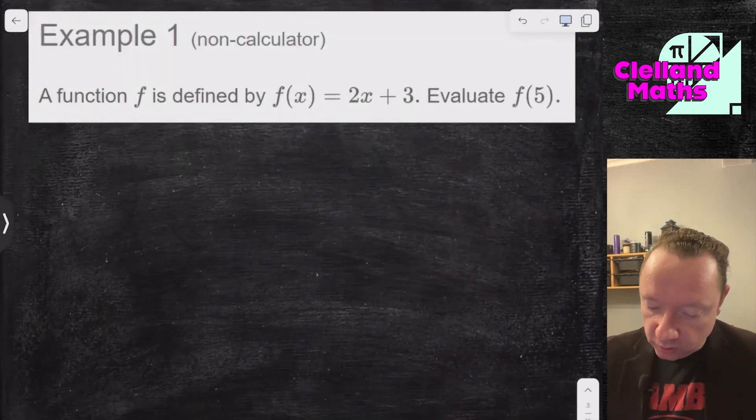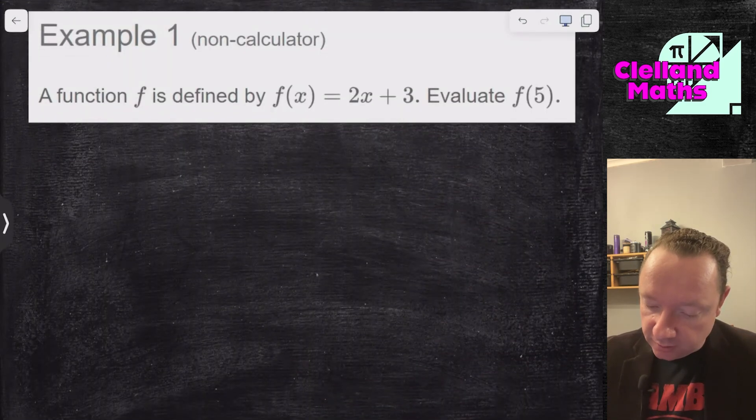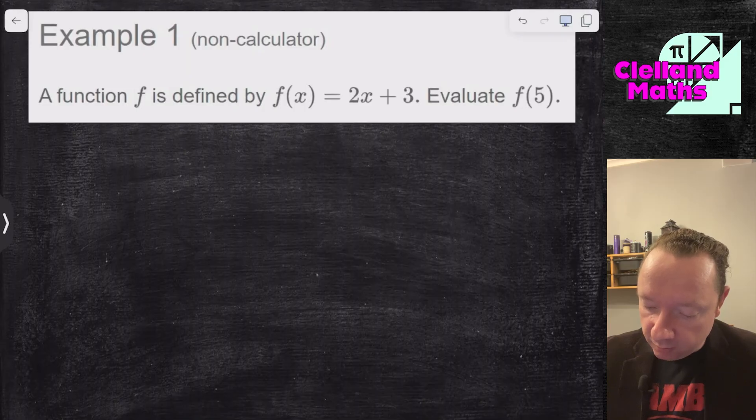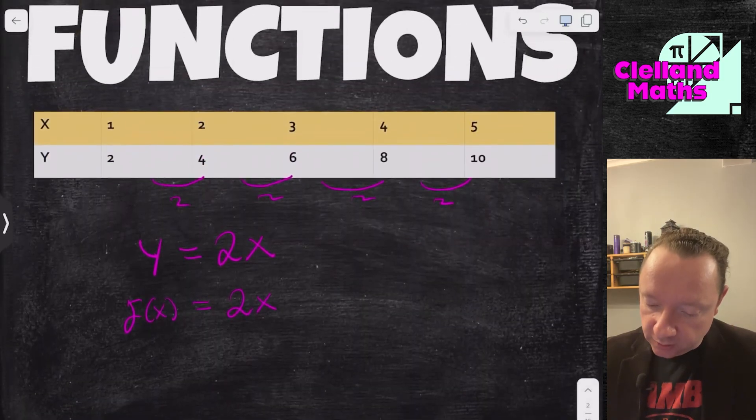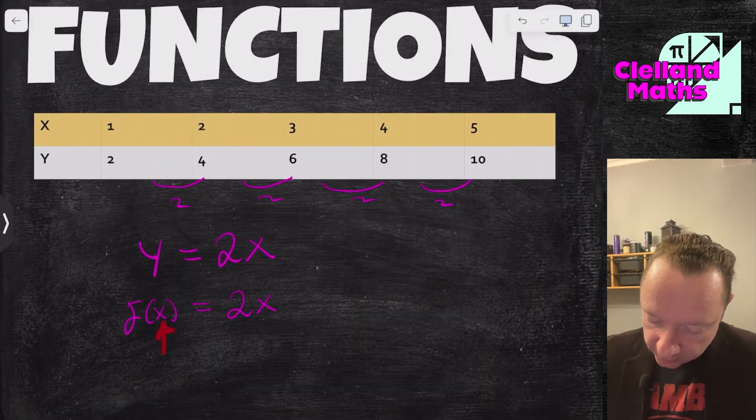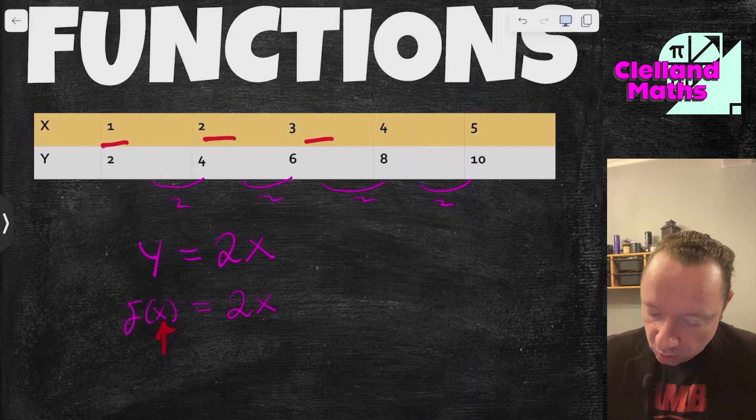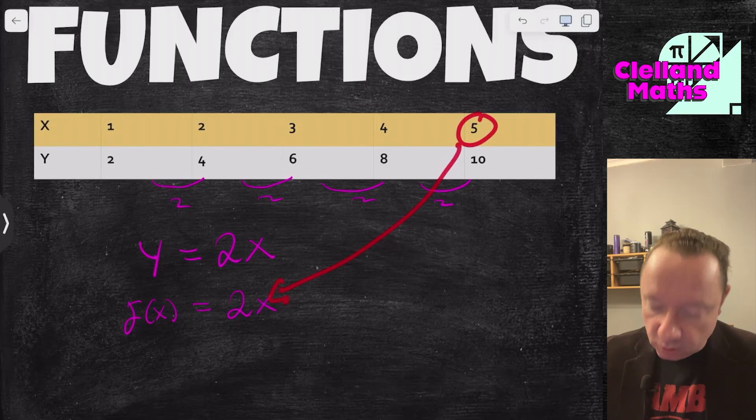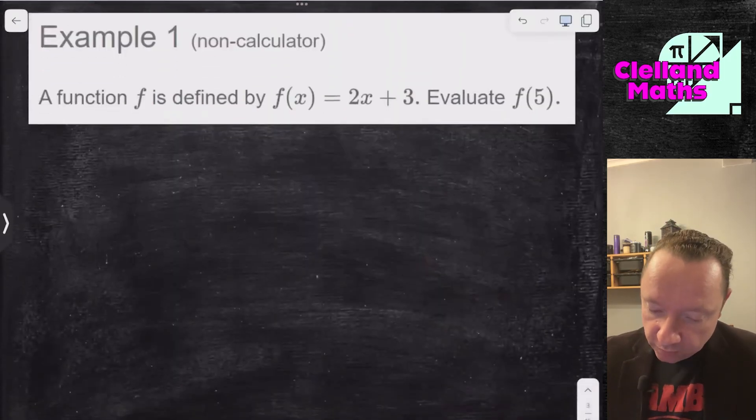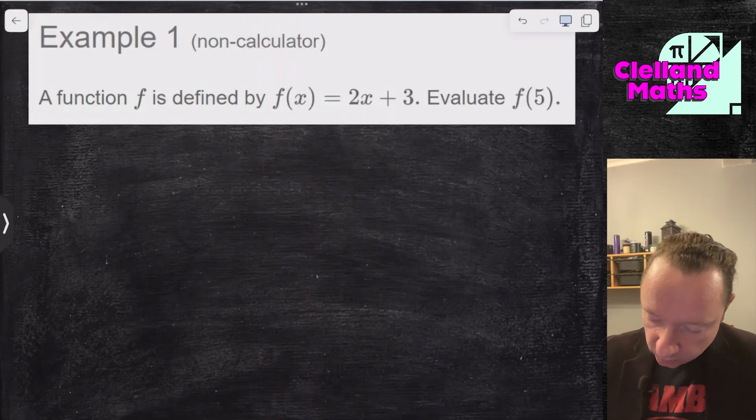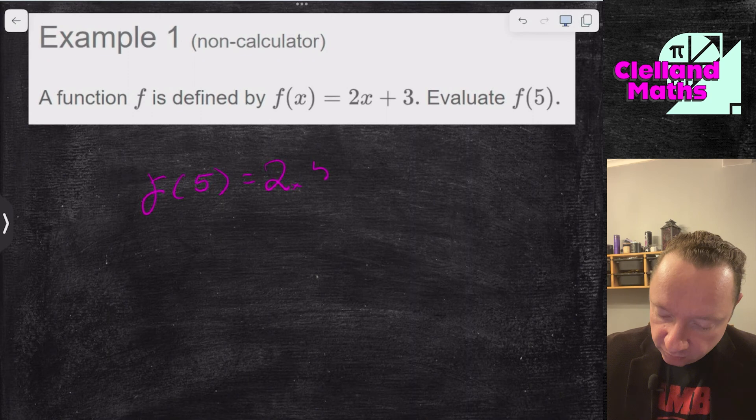Let's do an example of using that function notation. A function f is defined by f of x equals 2x plus 3. Evaluate f of 5. Well, in the context of our table, x is just a replaceable number. So if I want f of 5, 5 is getting replaced by x. So for this example, f of x is 2x plus 3, so to work out f of 5, I'll just do 2 times 5 plus 3. That's 10 add 3, which is 13.